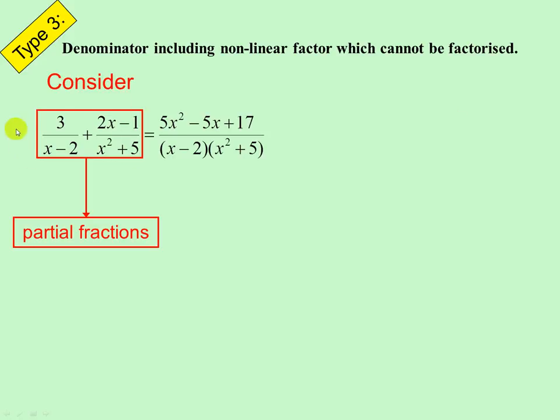Have a look at this. If we find a common denominator and simplify that, we see x squared plus 5 cannot be factorized, cannot go down anymore. There are our denominator - two factors - and we end up with this as the answer.